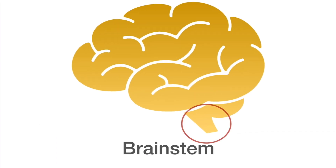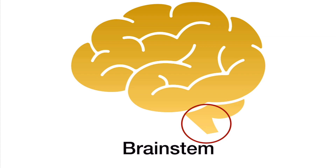Let's start with some of the most important parts: the brainstem. This is where a lot of the vital functions take place — things like respiratory rate, pulse rate, blood pressure, and the vomiting center. A lot of the things that are really crucial to just our body living.